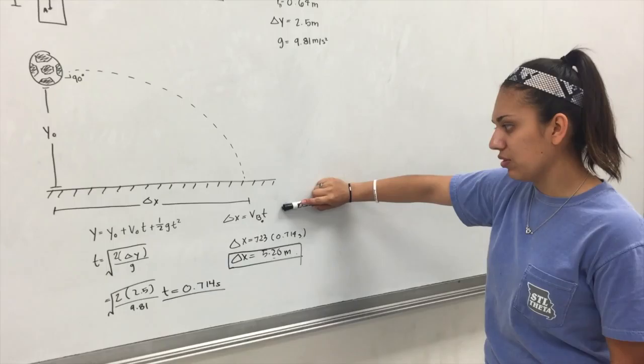And then we plug that into the equation delta X equals VB naught times T. When we plug those numbers in, we get delta X equals 5.20 meters.